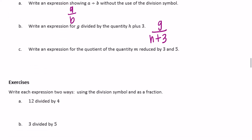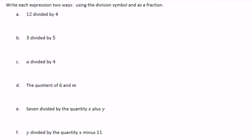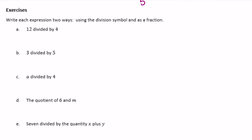Write an expression for the quotient of the quantity m reduced by 3 and 5. Remember, quotient is the answer to a division problem. So m reduced by 3 means m minus 3, divided by 5, giving us m minus 3 over 5.